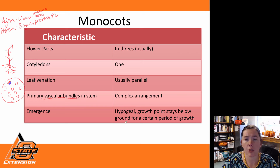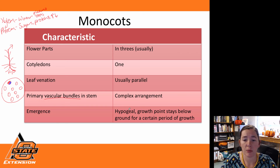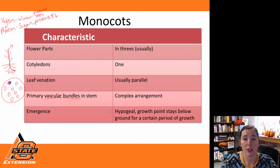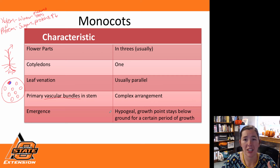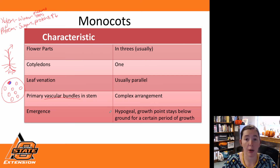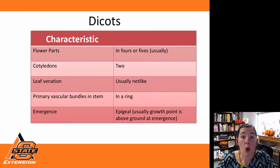We also have our type of emergence in our monocots, which is a hypogeal emergence. With hypogeal emergence, our growth point is actually staying below ground for a set amount of time, which is very dependent on the plant.